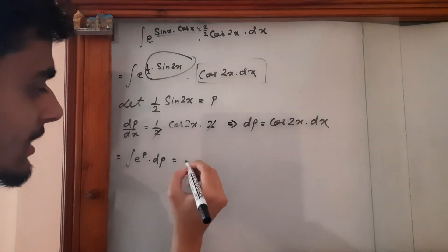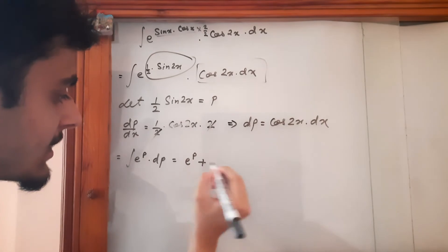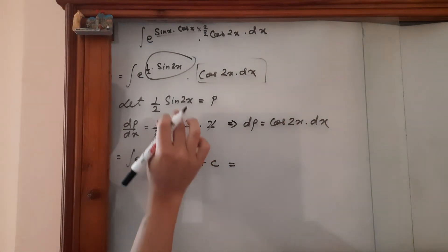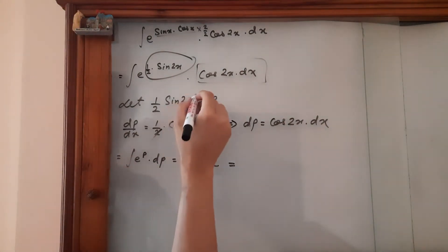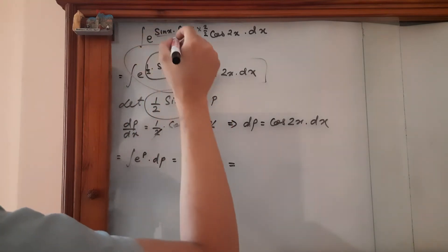Now we know that it is e to the power p plus c is equal to, we use p as this. So this can once again be written as this.